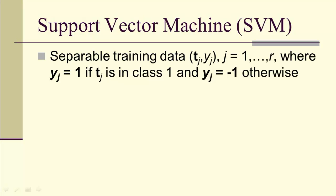Now we have our support vector machine. Separable training data, where y_j is 1, if t_j is in class 1, and y_j is negative 1, otherwise.